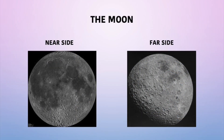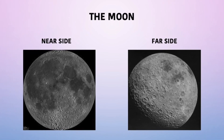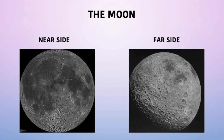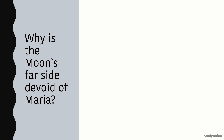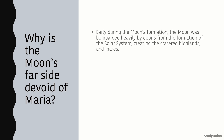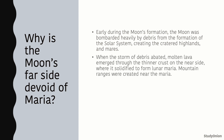Now, can you spot the difference in these two photos of the moon? If you look at both photos showing either side of the moon, you might notice one significant difference. The far side of the moon is devoid of Maria. This is because early during the moon's formation, the moon was bombarded heavily by debris from the formation of the solar system, which created cratered highlands and Maria. When the storm of debris abated, molten lava emerged through the thinner crust on the near side, where it solidified to form lunar Maria.